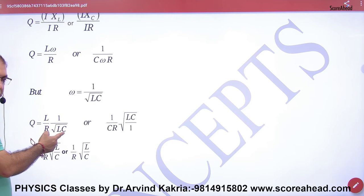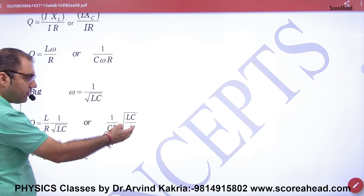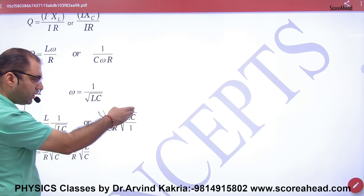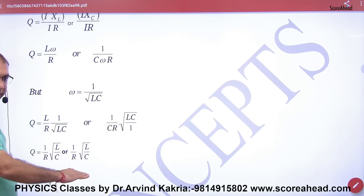If L is under root in it, then what will become L-square? L-square from LC cancels to give L over C. The answer is the same. The formula is the same.